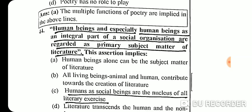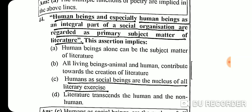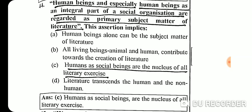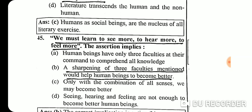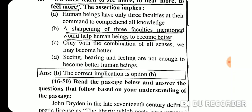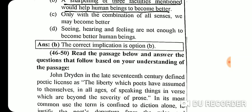Question 44: 'Human beings, and especially human beings as an integral part of a social organization, are regarded as primary subject matter of literature' — this assertion implies that humans as social beings are the nucleus of all literary exercises. Question 45: 'We must learn to see more, to hear more, to feel more' implies that sharpening the three faculties of seeing, hearing, and feeling would help human beings to become better.